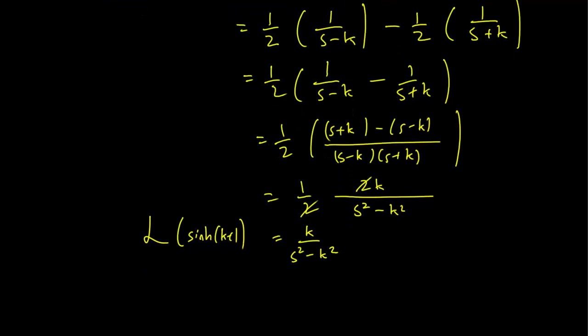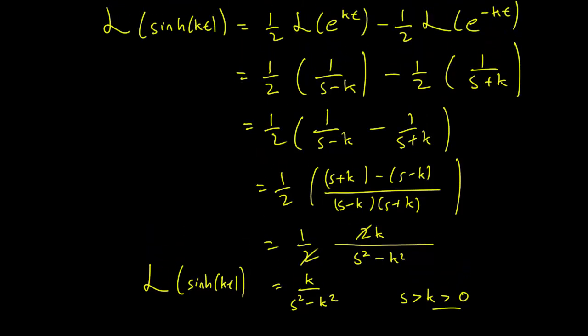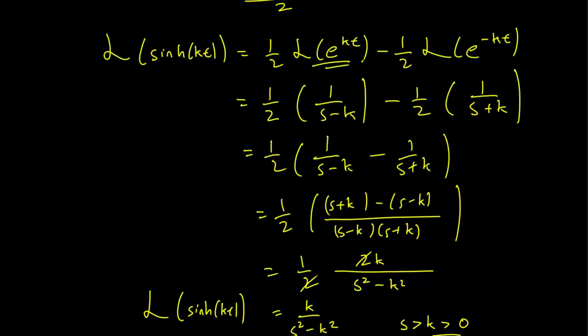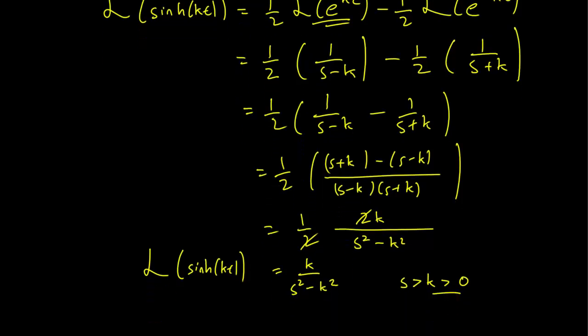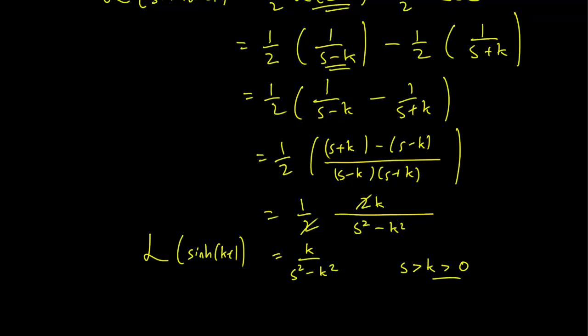So this works if s is bigger than k is bigger than 0. We know that k is bigger than 0 because that's what we needed for the Laplace transform of the exponential function. And we needed s to be larger than k, otherwise we would have some funniness with the division by 0.